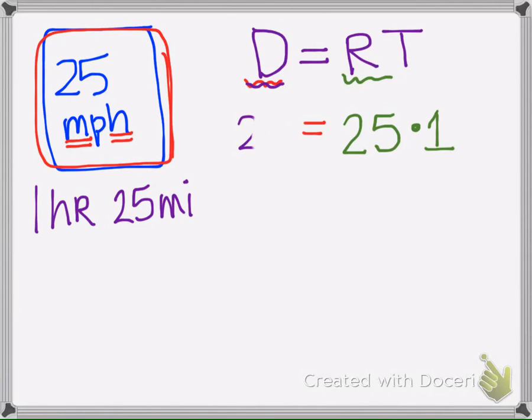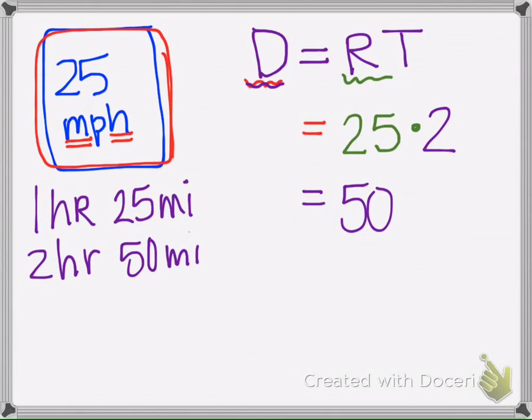And then your distance, if you drive two hours instead of one hour, your distance is going to be 50. So in two hours, 50 miles. So that's how this formula here works. You take however your speed is and multiply it by how long, and that gets you how far you travel.